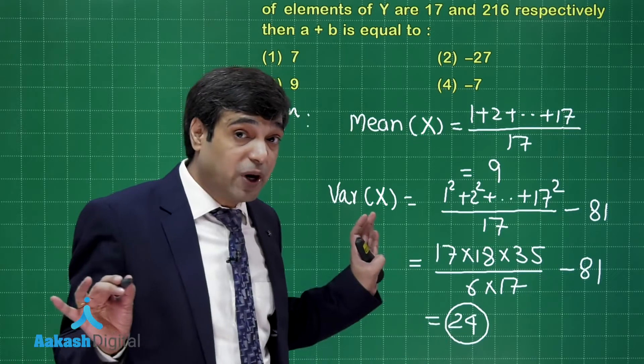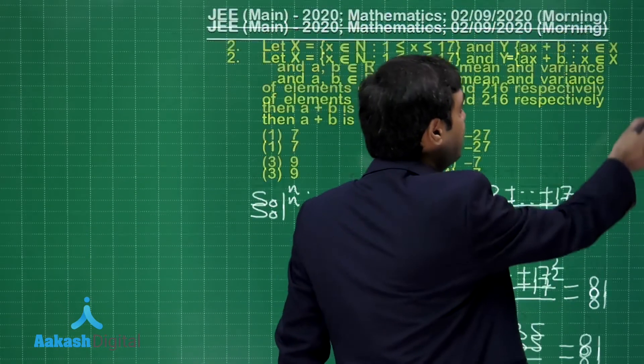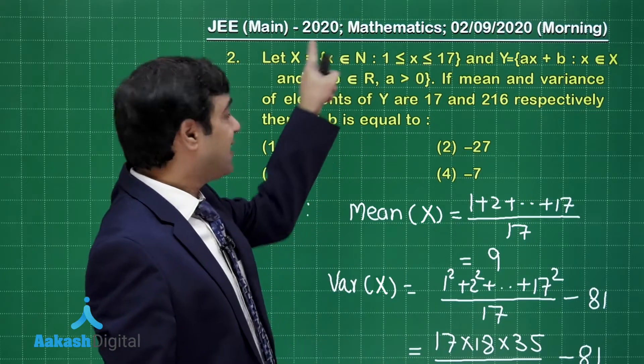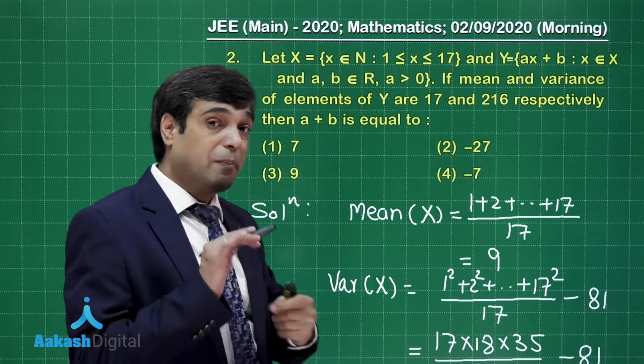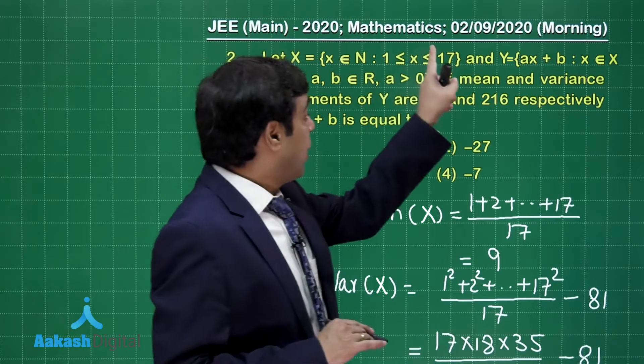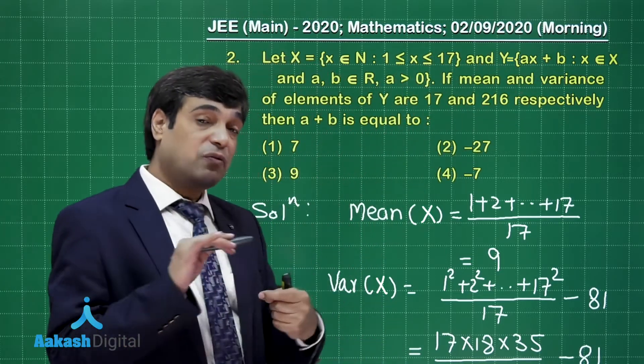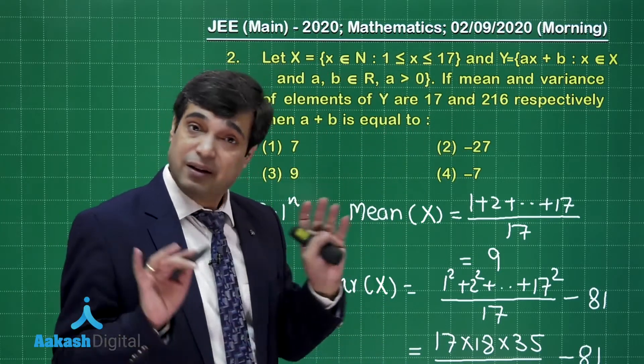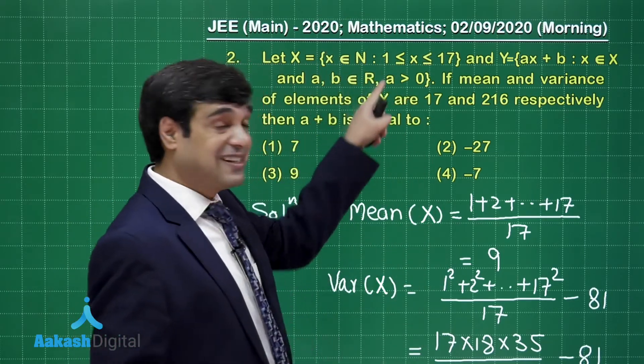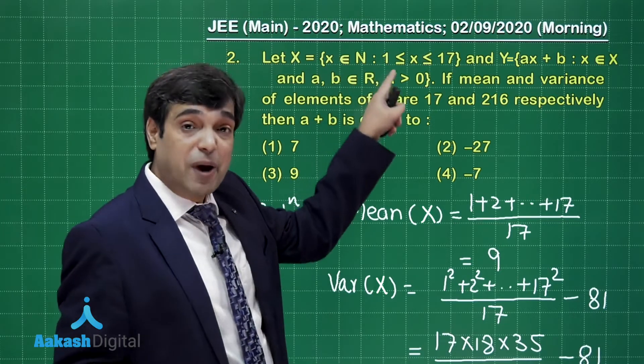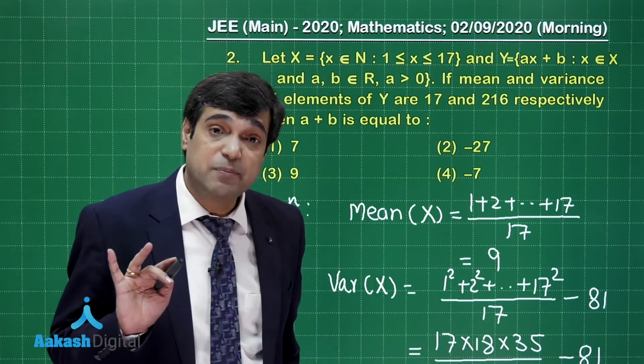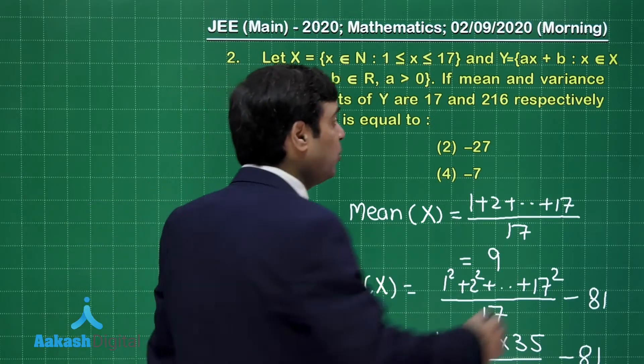Now what is required? We have to talk about Y. We know that when mean for this X data is given and you are multiplying by some number a, mean for the new data will also get multiplied. When you are adding something like b, the mean will also get added by b. What happens in variance? When you talk about variance of this data as σ², variance of the new data will be a²σ².